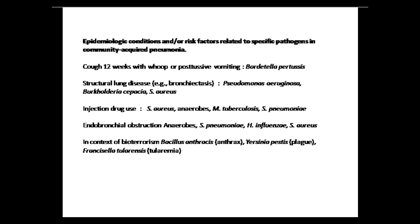Structural lung disease like bronchiectasis predisposes to Pseudomonas and Burkholderia cepacia (formerly Pseudomonas cepacia). In cystic fibrosis or similar structural lung disease, also consider Staph aureus. Injection drug users are at risk for Staph aureus and anaerobes due to aspiration. Bronchial obstruction — typically from tumor — causes post-obstructive pneumonia with anaerobes, gram-negatives, H. flu, and Staph aureus. Bioterrorism contexts should raise concern for anthrax, Yersinia pestis (plague), or tularemia.